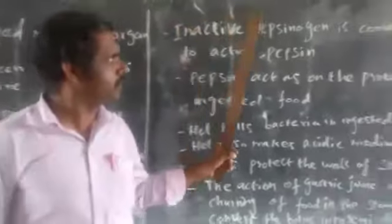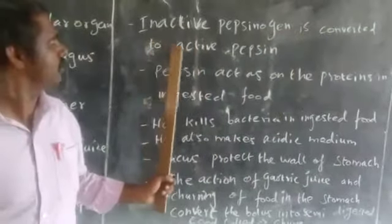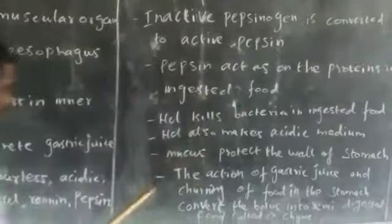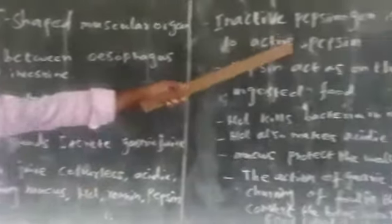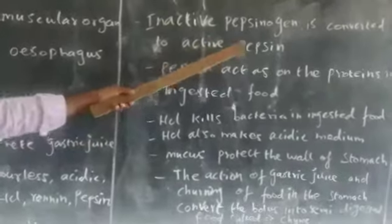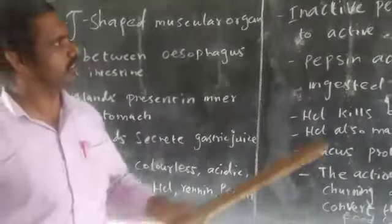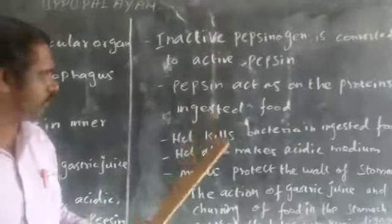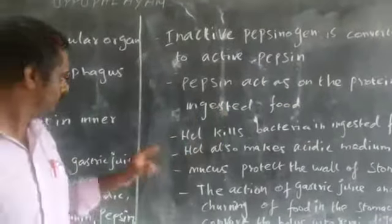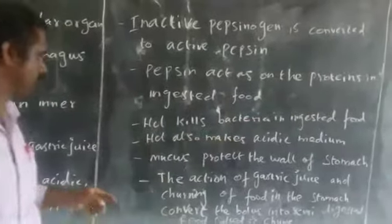The inactive pepsinogen is converted into reactive pepsin by hydrochloric acid. These pepsin acts on the protein in our ingested foods.